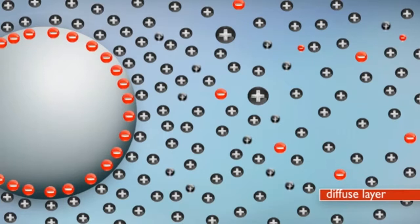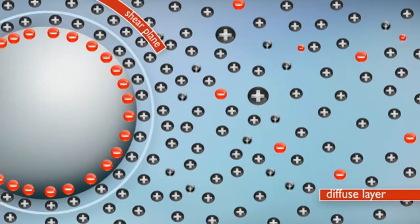The second layer is called the diffuse layer. The boundary between the stationary and diffuse layers is called the Stern potential or streaming potential. If the diffuse ions are displaced from the particle, a potential difference is created and can be measured.